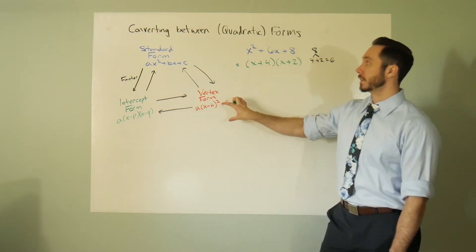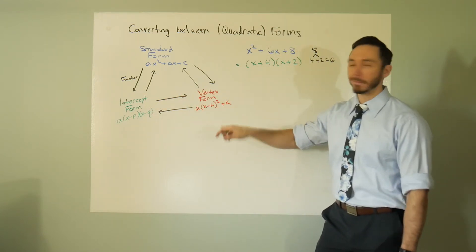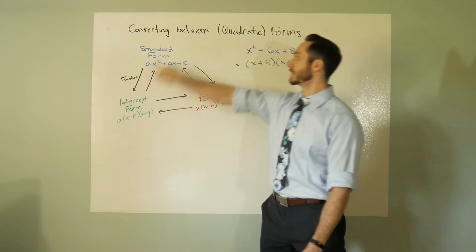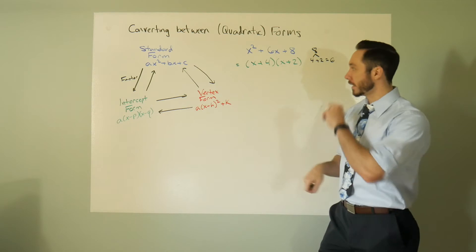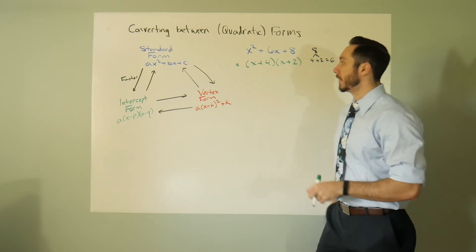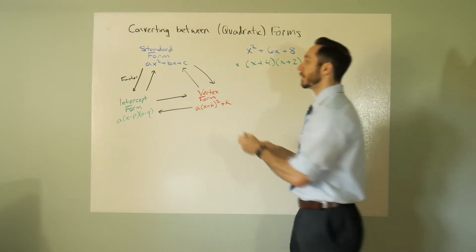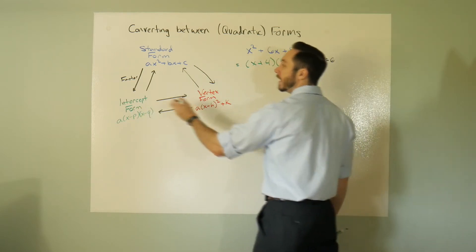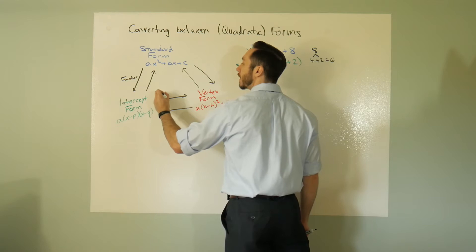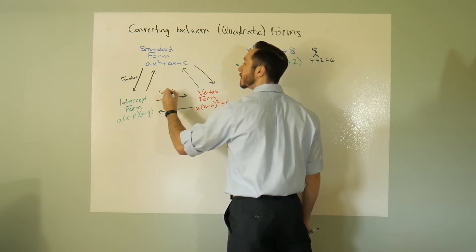If you're in intercept form, there's really no good way to go straight from intercept form to vertex form. You actually have to kind of go the long way home. You actually have to go back to standard then into vertex. So if I want to go from intercept to vertex, I'm going to say go to standard.